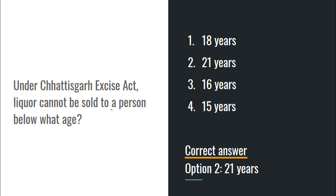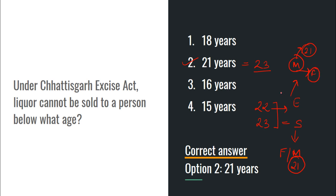Next: Under the Chhattisgarh Excise Act, liquor cannot be sold to a person below what age? The answer is 21 years — liquor cannot be sold below 21 years. This prohibition of sale is under Section 23. Remember clearly: Section 22 deals with prohibition of employment, and Section 23 deals with prohibition of sale. Under Section 23, no one — irrespective of gender — below 21 years can be sold liquor. Under Section 22, for employment, males below 21 years cannot be employed, and females of any age cannot be employed.